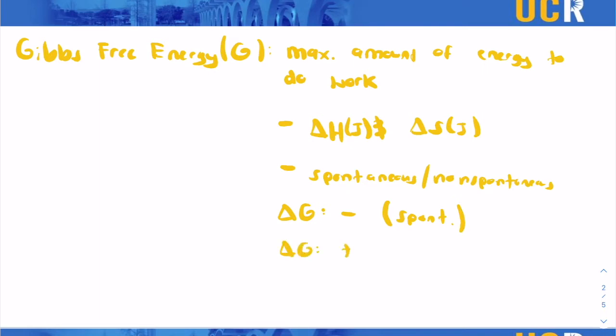If the delta G is positive, that means the reaction or process is non-spontaneous. And if delta G is ever zero, it is at equilibrium.